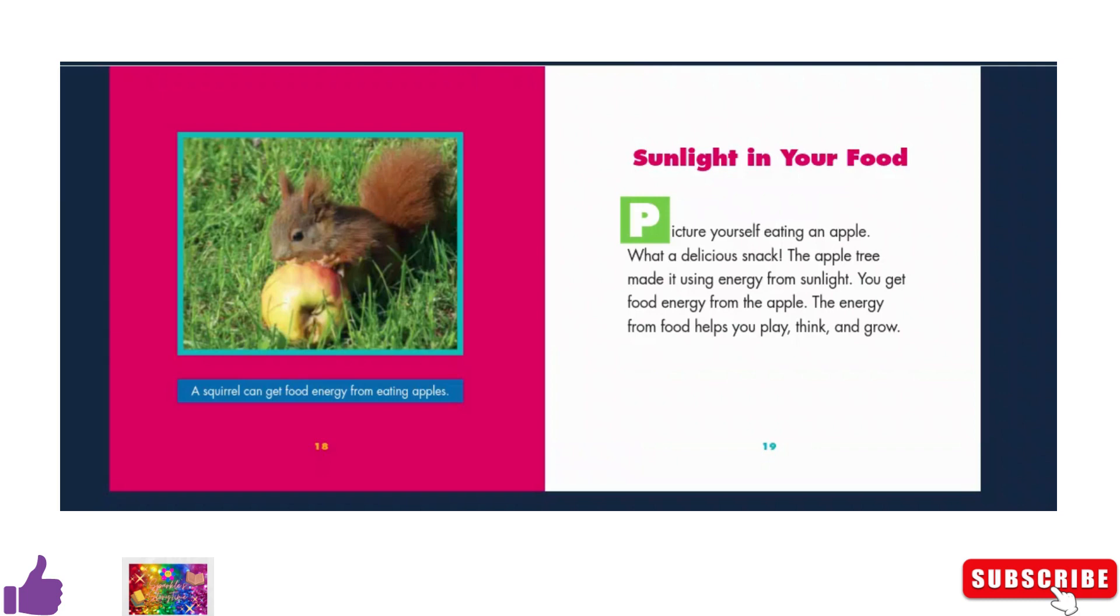A squirrel can get food energy from eating apples. Sunlight in your food. Picture yourself eating an apple. What a delicious snack! The apple tree made it using energy from sunlight. You get food energy from the apple. The energy from food helps you play, think, and grow.